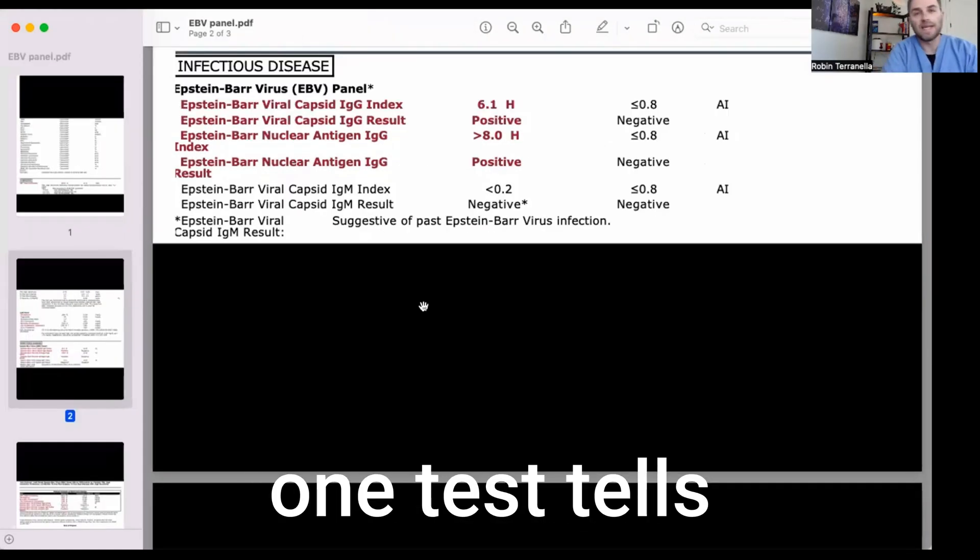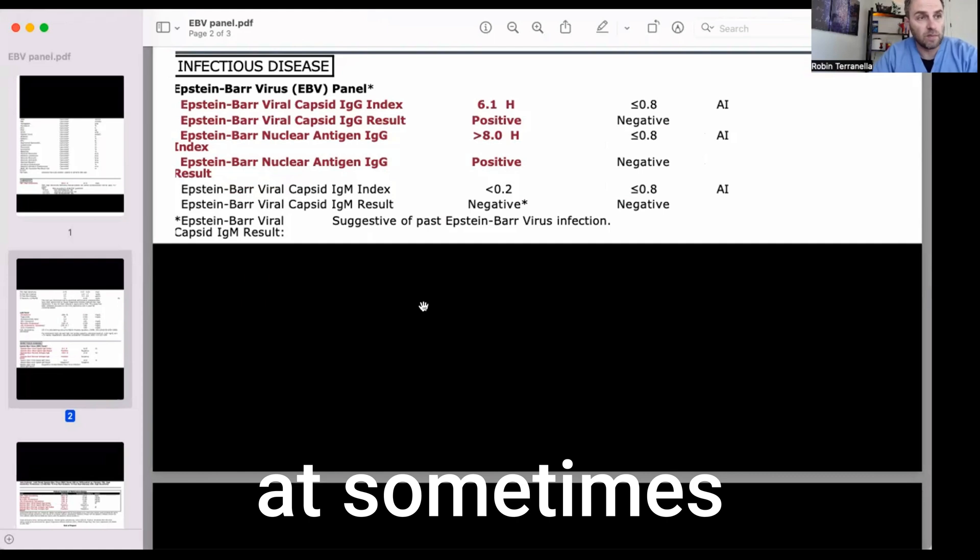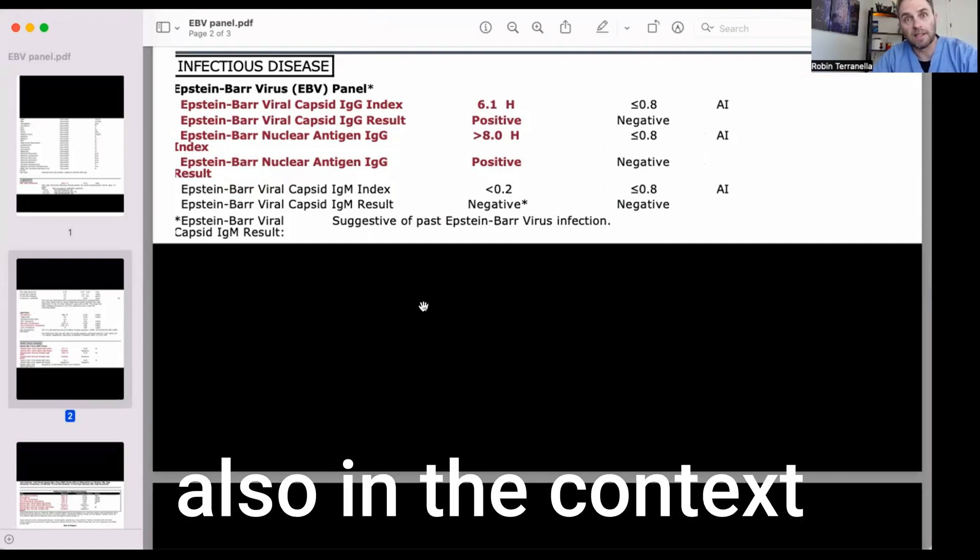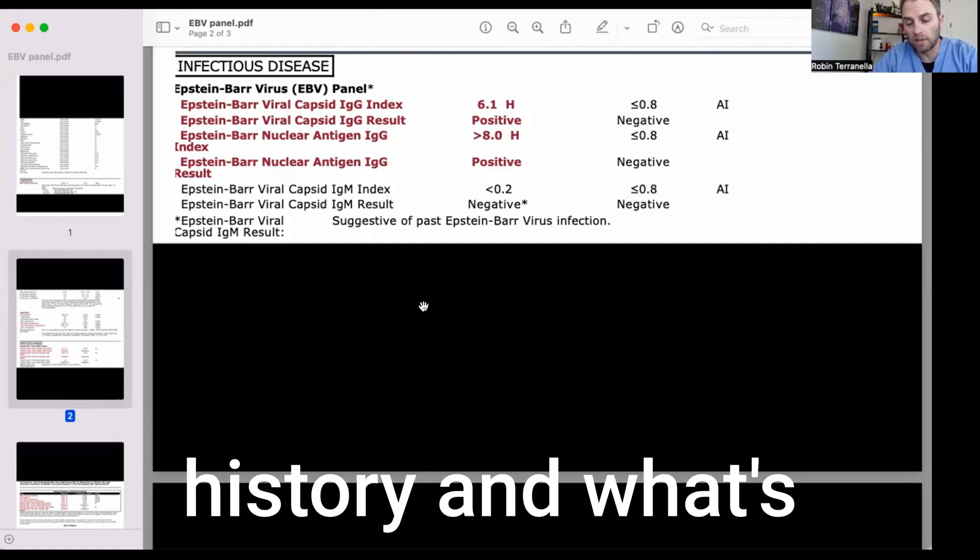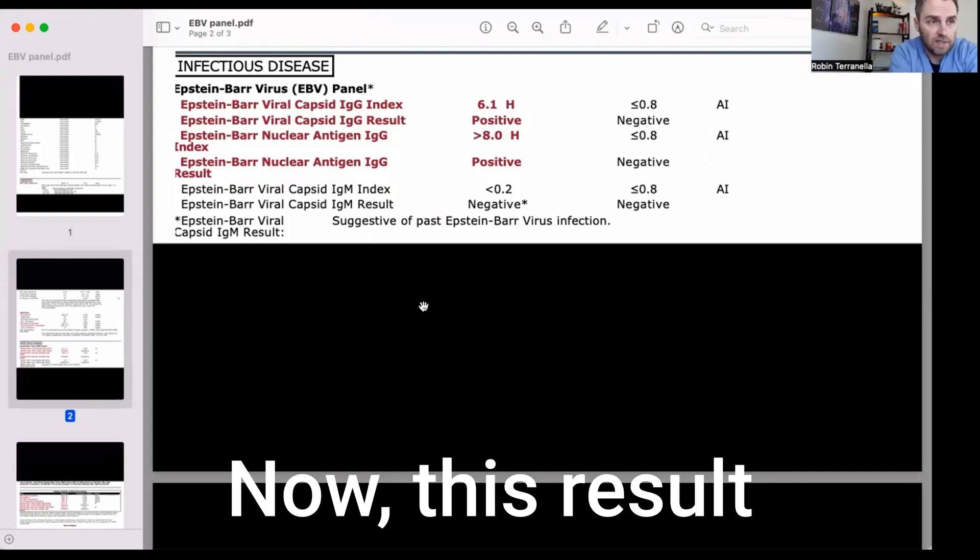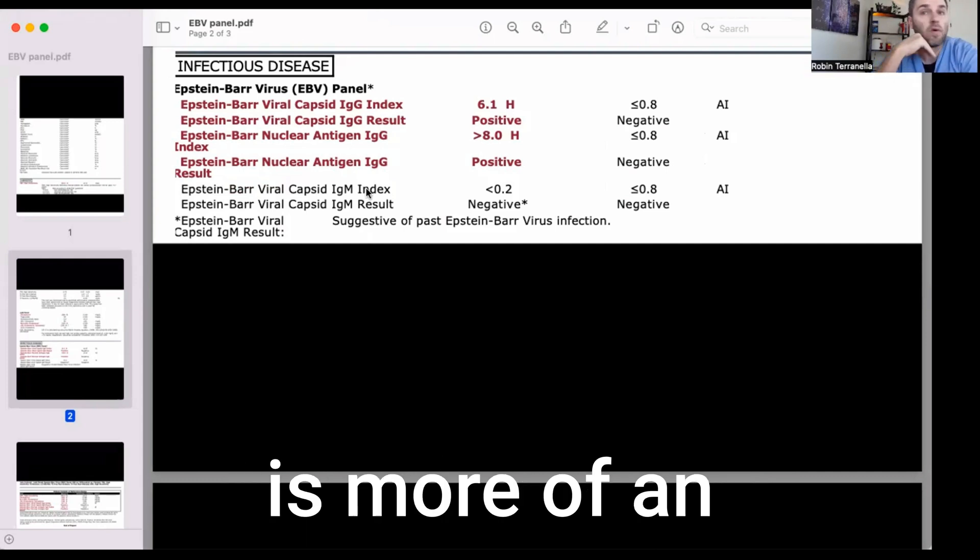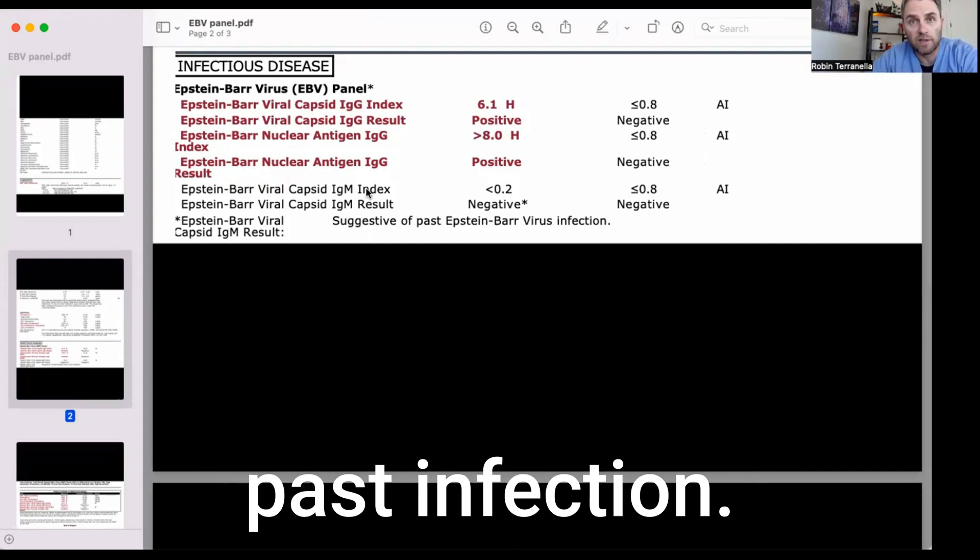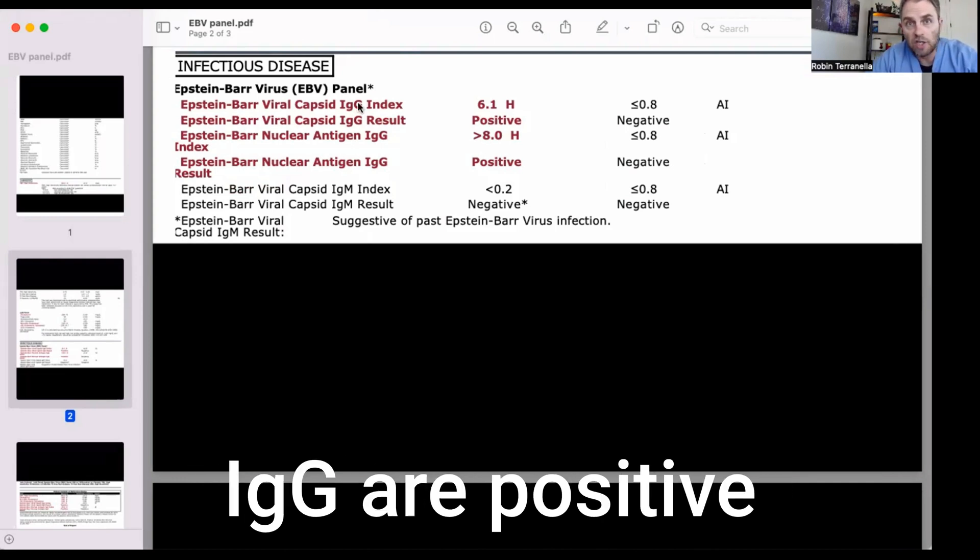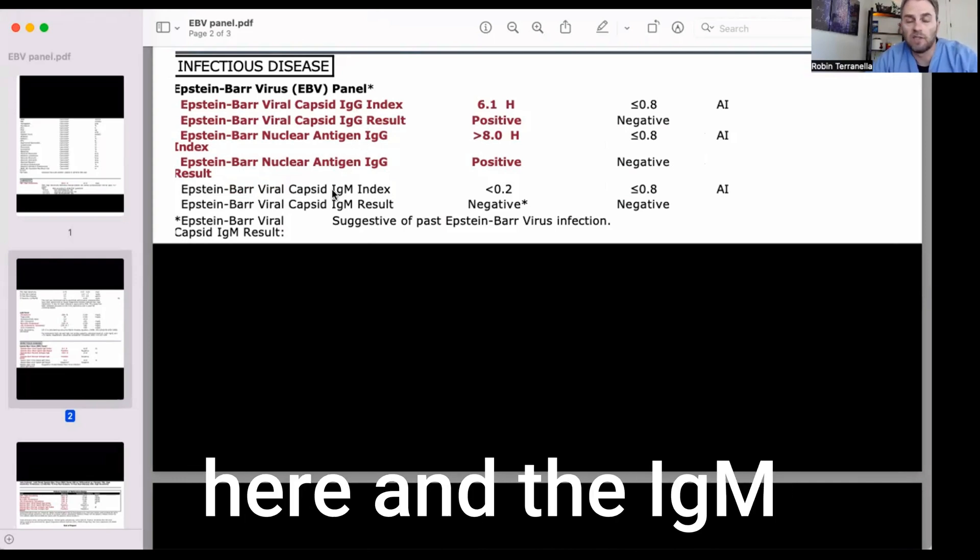So again, no one test tells us everything you have to look at, sometimes multiple tests, also in the context of the person's history and what's currently going on with them. Now, this result is more of an indicator of a past infection. You'll see that the IgG are positive here, and the IgM is negative.